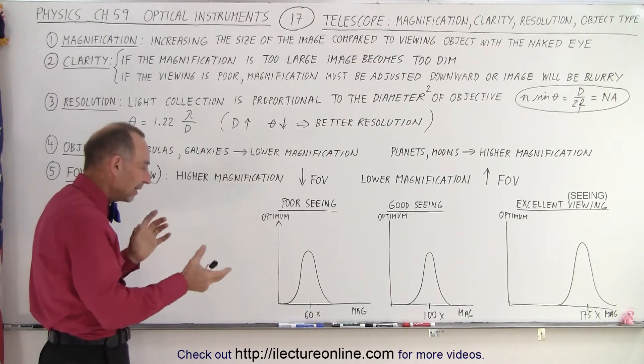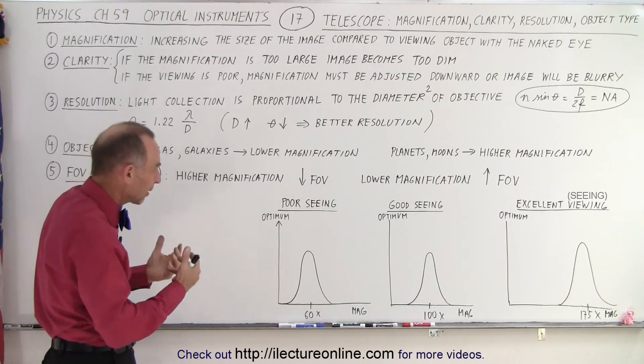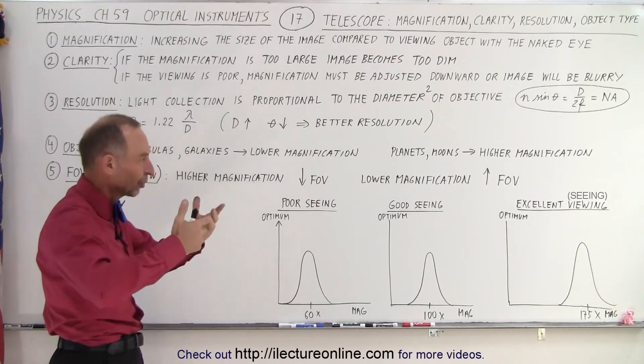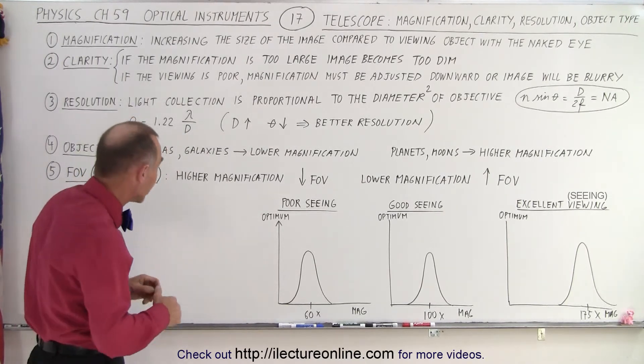So galaxies and nebulas tend to require a little bit lower magnification for a better picture. Planets and moons—you're allowed to go to higher magnification and still get good detail in your pictures.